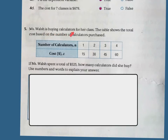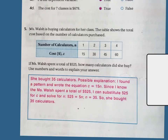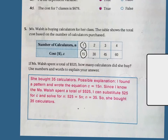Mrs. Walsh is buying calculators for her class. The table shows the total cost based on the number of calculators purchased: 1 calculator is $15, 2 is $30, 3 is $45, and 4 is $60. If Ms. Walsh spends a total of $525, how many calculators did she buy? She bought 35 calculators. The pattern or equation is C equals 15N — for every one, it increased by 15. Since she spent $525, I substitute 525 for C and solve: 525 equals 15N, so N must be 35.